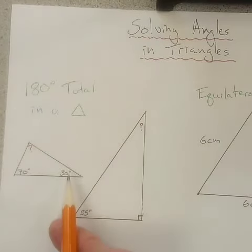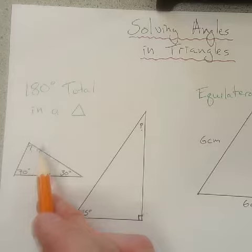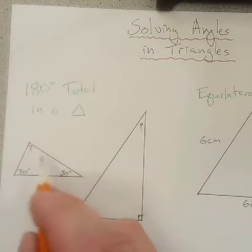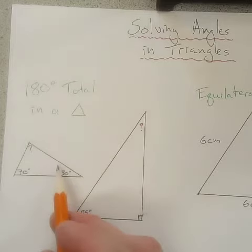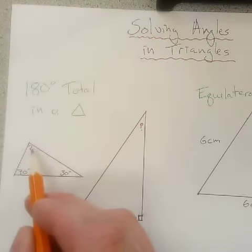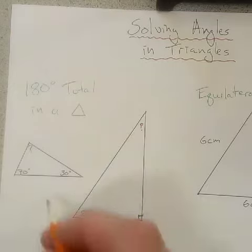If you have two angles of a triangle, you can solve for the third using this. Since they all need to add up to 180, if we subtract these from 180, the unknown angle is what's left.